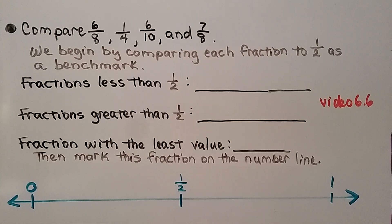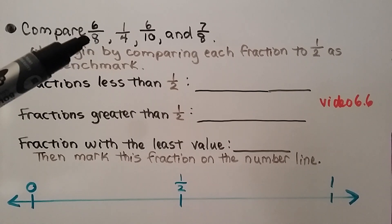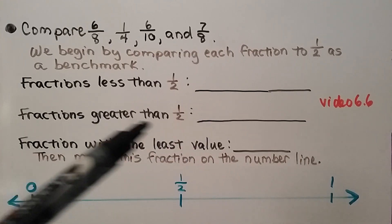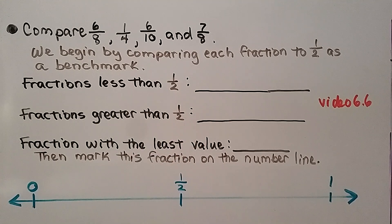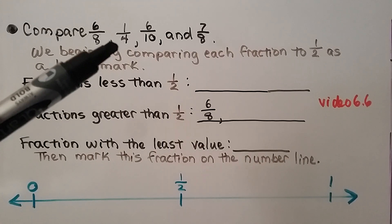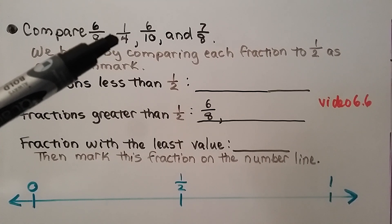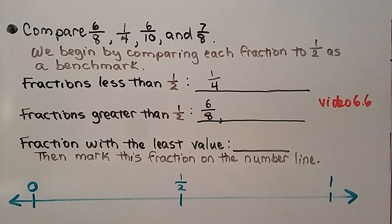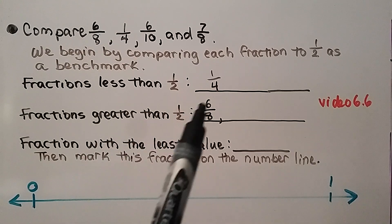Compare six-eighths, one-fourth, six-tenths, and seven-eighths. We begin by comparing each fraction to half as a benchmark. Half of eight is four, so four-eighths would be half — six-eighths is greater than half. Half of four is two, so two-fourths would be half — one-fourth is less than half, so we put it in the list of fractions less than half. Half of ten is five, so five-tenths is half — six-tenths is greater than half.